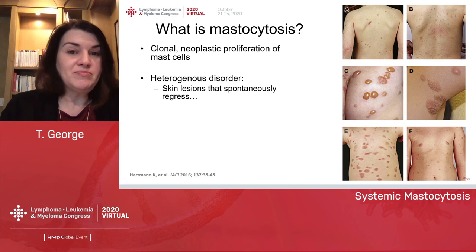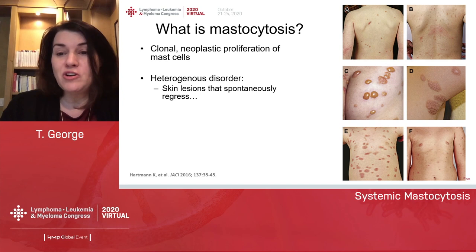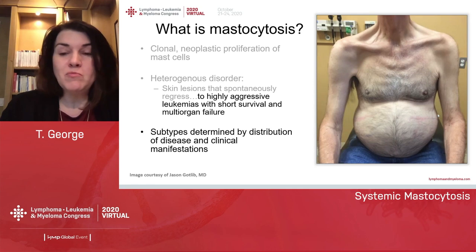So what is mastocytosis? It's a very heterogeneous disorder because it presents as skin lesions that spontaneously regress in children, as shown in these images, to highly aggressive leukemias with short survival and multi-organ failure. The subtypes of mastocytosis are determined by the distribution of disease and the clinical manifestations of disease.